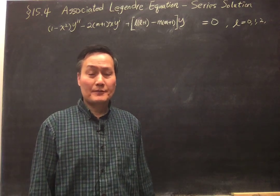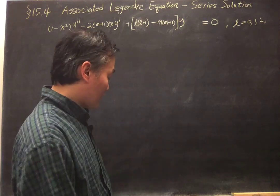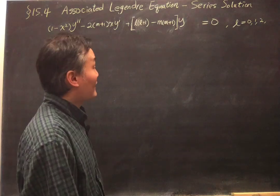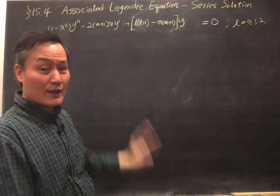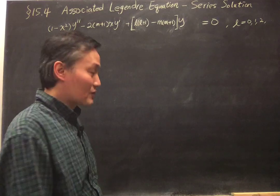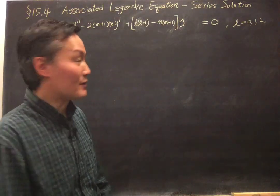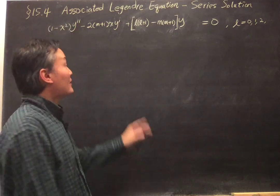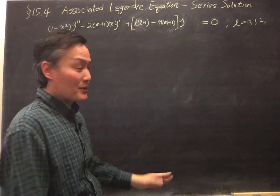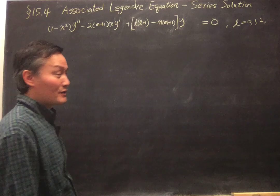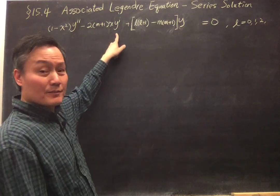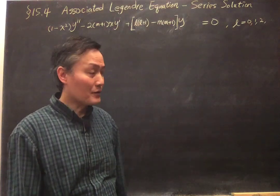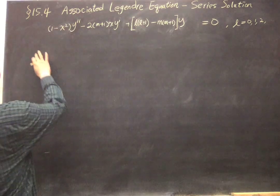We continue on Section 15.4 about the associated Legendre equation. Last time we transformed that into an equation involving the associated Legendre function, which we defined as a factor to the power m/2 times the script p, using y instead of script p to make it easier to work with. We need to solve this equation, and to do that we first try the series method, assuming y takes the form of a series.